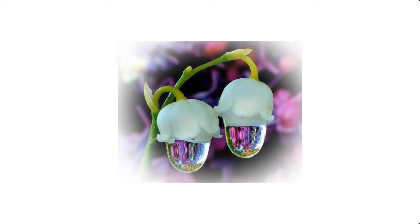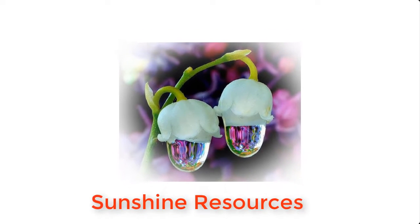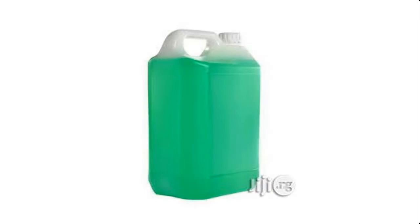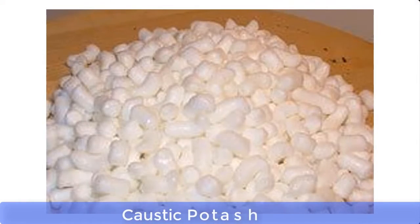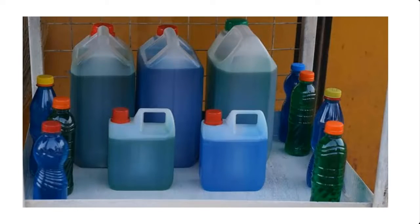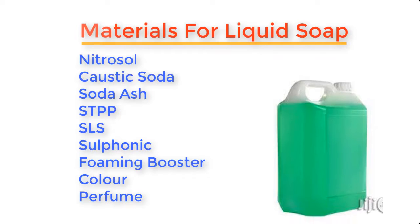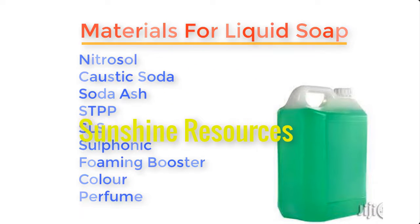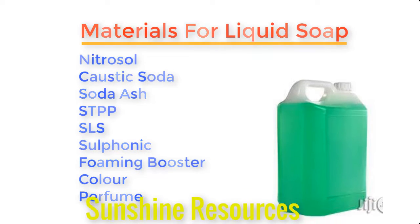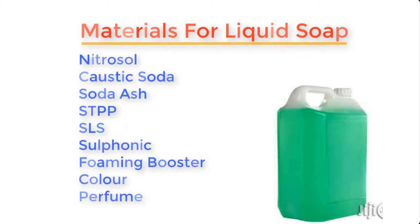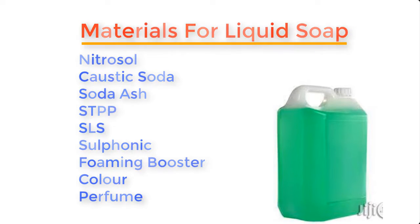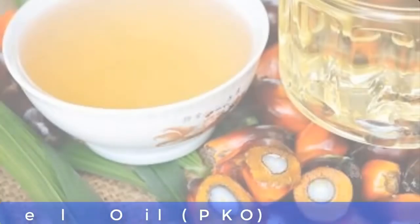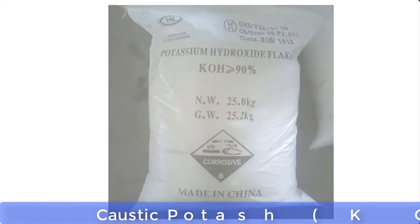Hello and welcome. My name is Sunshine, the project manager at Sunshine Resources. In this video I'm going to show you how to make liquid soap with just two materials, and these are vegetable oil and caustic potash.